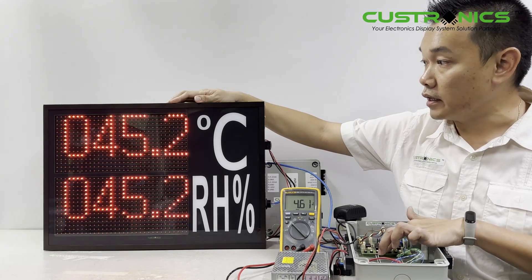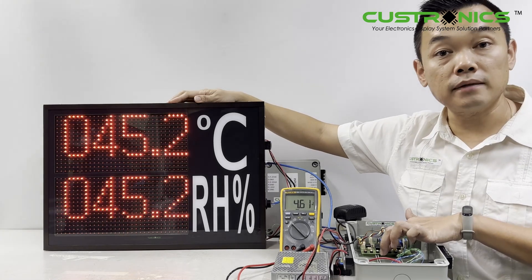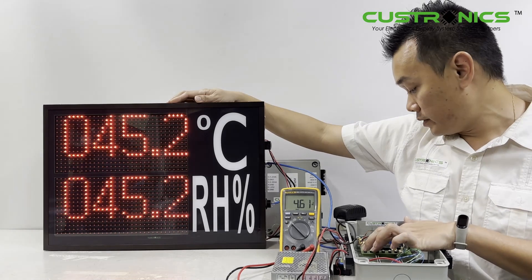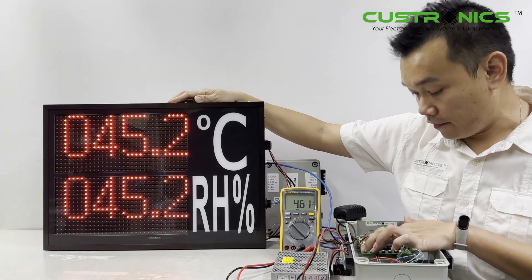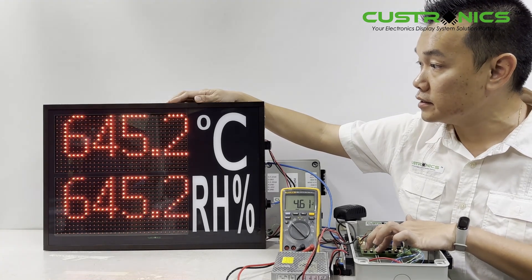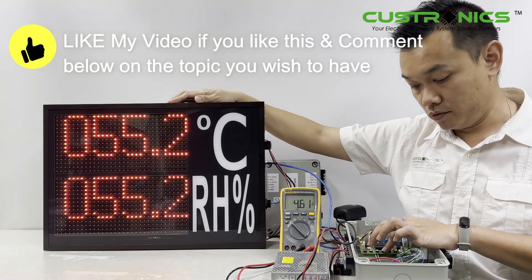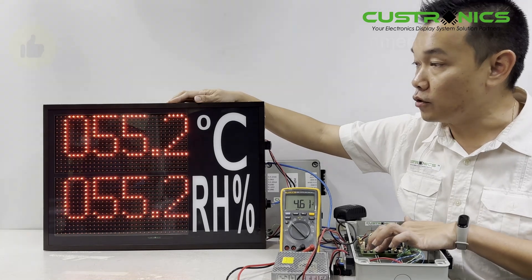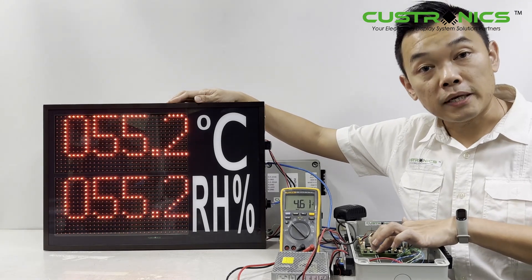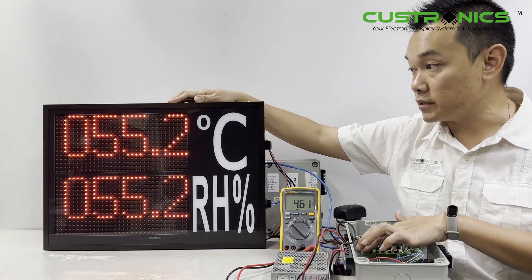Once done, press and hold the button again. This sets the minimum value. Once you set it, let go. Then set the maximum value - let's say 55. I'll set 55.2. Once I set it, press and hold the third button. Now I've set the minimum at 45.2 and the maximum at 55.2.